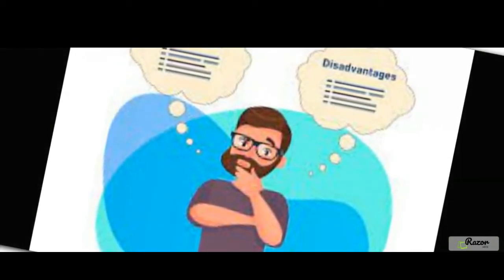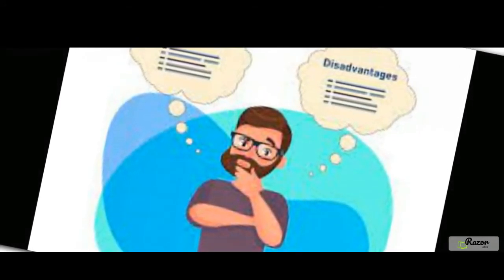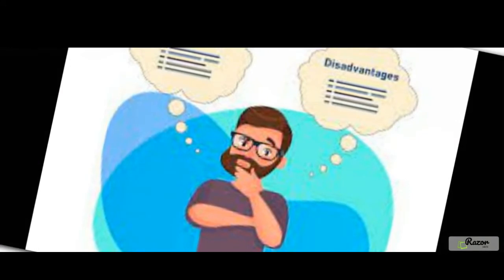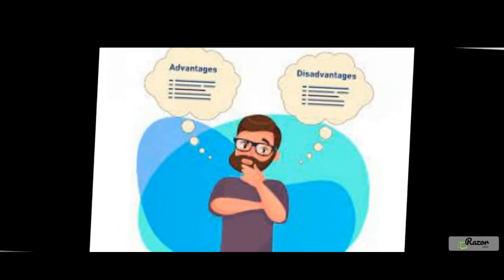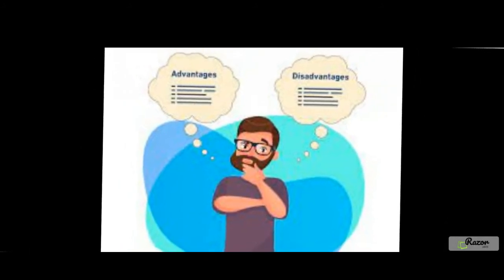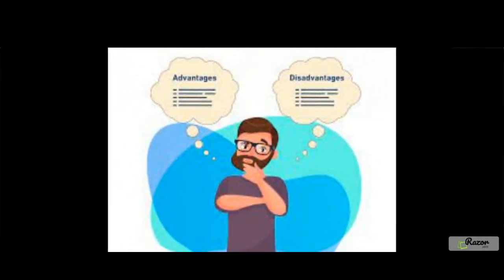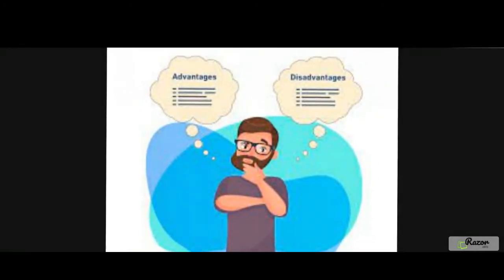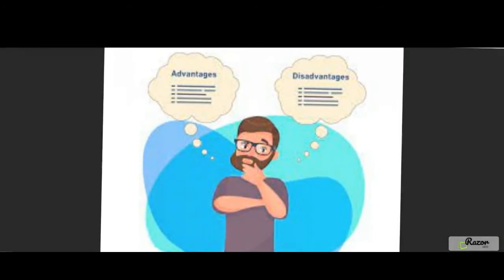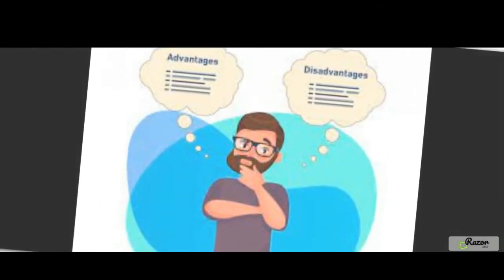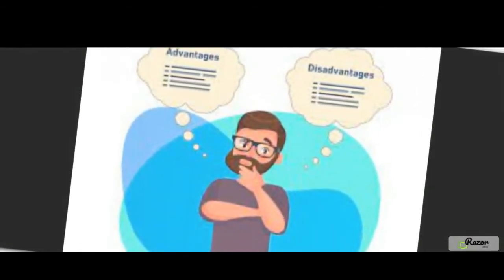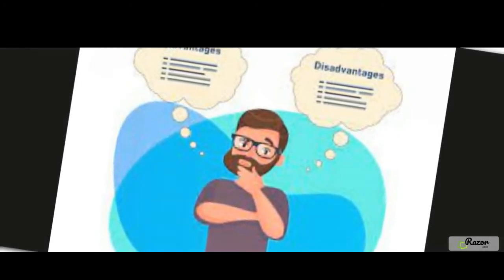Insurance in some form is as old as historical society. So-called buttery contracts were known to merchants of Babylon as early as 4000–3000 BCE. Under a buttery contract, loans were granted to merchants with the provision that if the shipment was lost at sea, the loan did not have to be repaid — the interest on the loan covered the insurance risk.